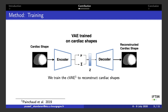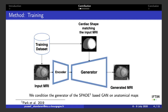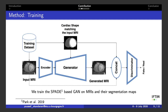In parallel to the variational autoencoder, we also train an image-to-image generator based on the spatially-adaptive denormalization layer, which learns to transform input segmentation maps to realistic MR images. This generator is trained in an adversarial manner using a discriminator. The discriminator is fed during training either a real MR image from the training dataset or a generated MRI output by the generator. Both of these inputs are concatenated with the input segmentation map. The discriminator then tries to predict whether its input is real or generated, which forces the generator to output images increasingly resembling those from the training set and matching the shape of the input segmentation map.